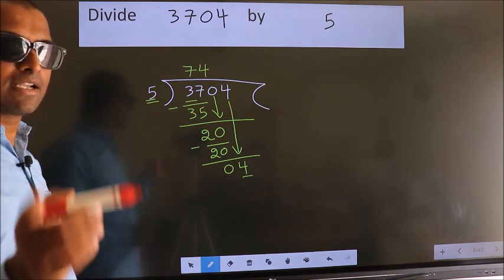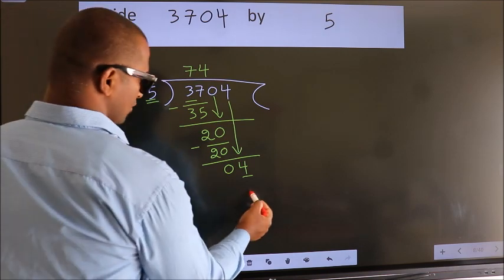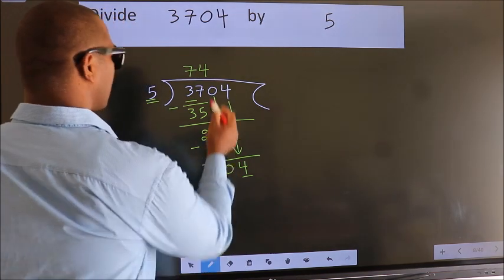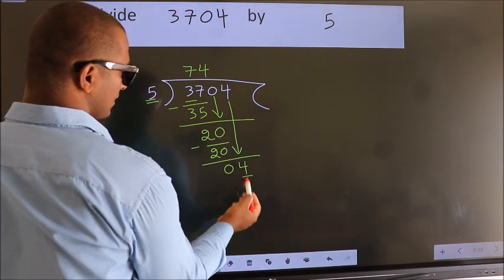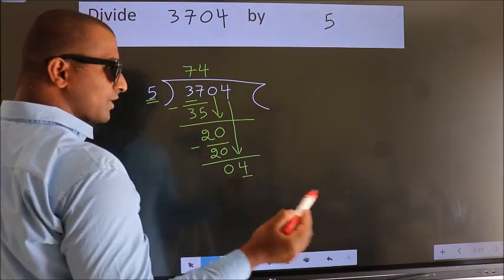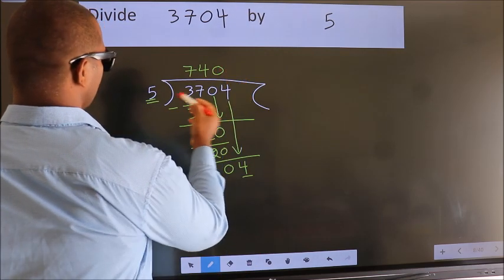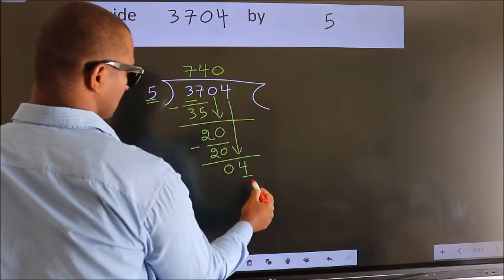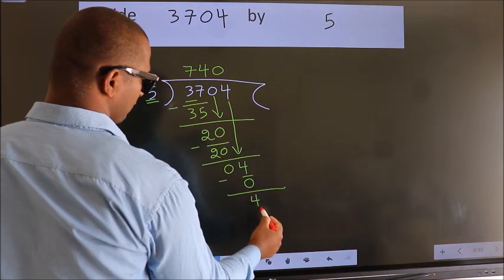Instead of that, what we should think of doing is which number should be right here? If I take 1, we get 5. But 5 is larger than 4. So what we do is we take 0 here. So 5 into 0 is 0. Now we subtract. We get 4.